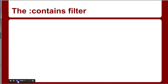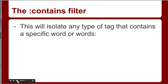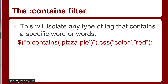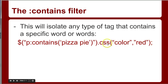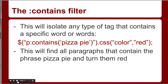There's also the contains filter. This is going to isolate any type of tag that contains a specific word or words — I find this one particularly useful. Say I had a bunch of paragraphs and I only wanted to isolate those that have the phrase 'pizza pie' in them. I surround the entire expression in double quotes and use single quotes for the search string. Any paragraph containing 'pizza pie' will have a CSS color of red applied to it.